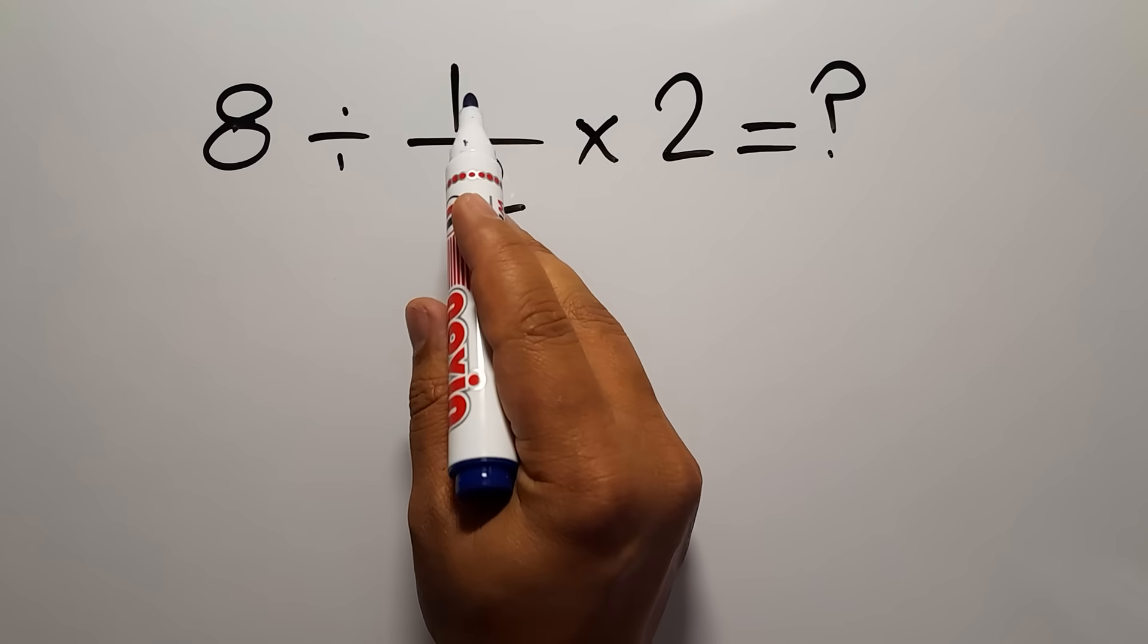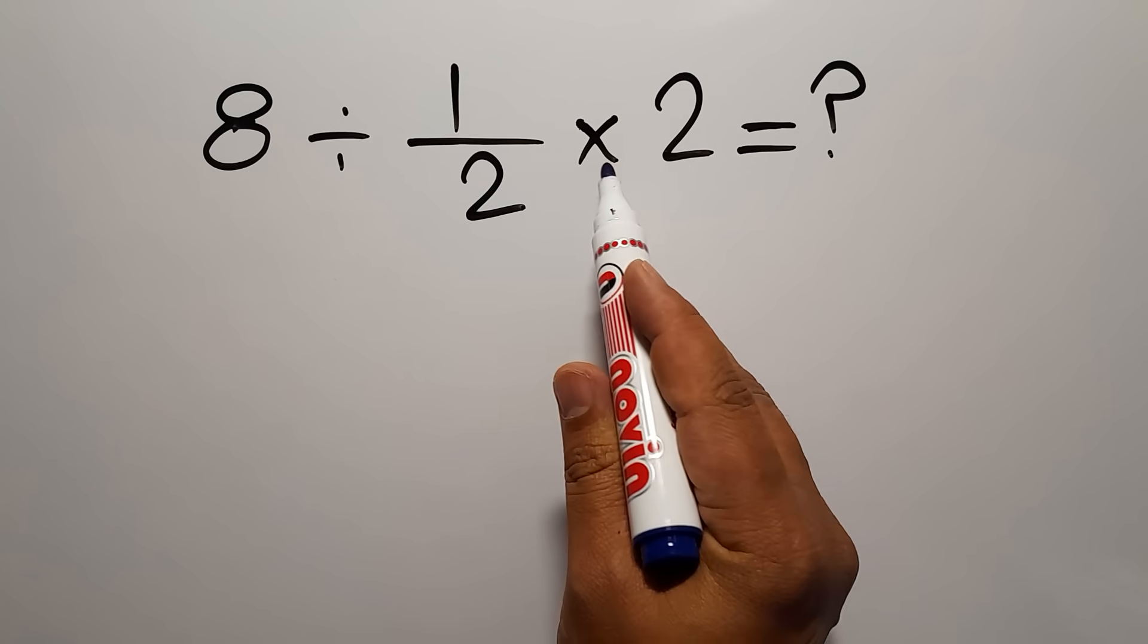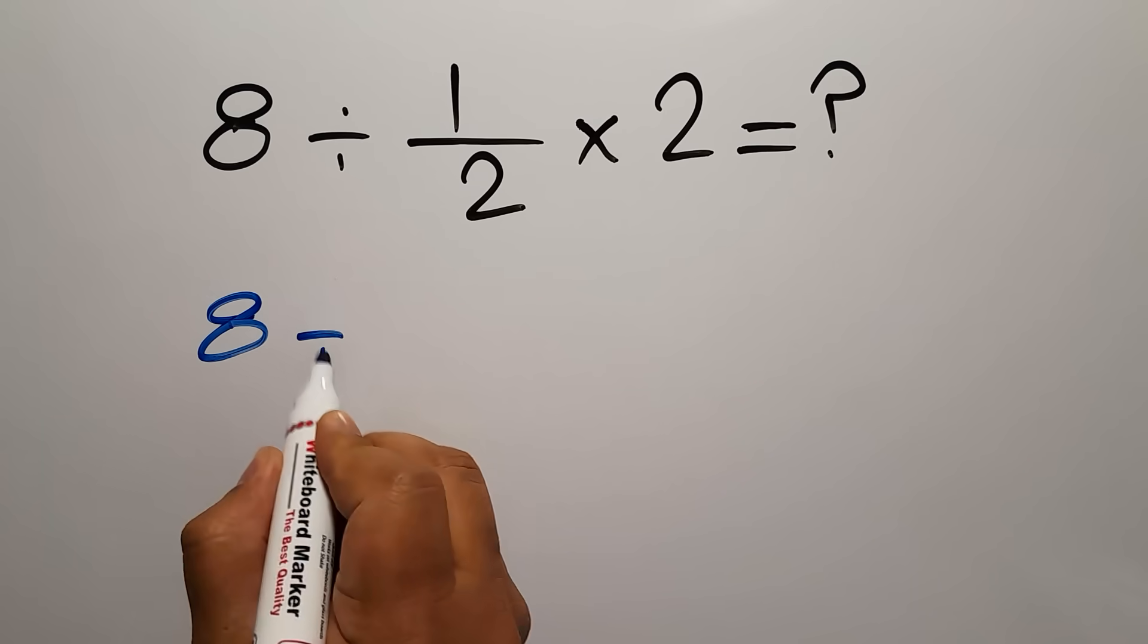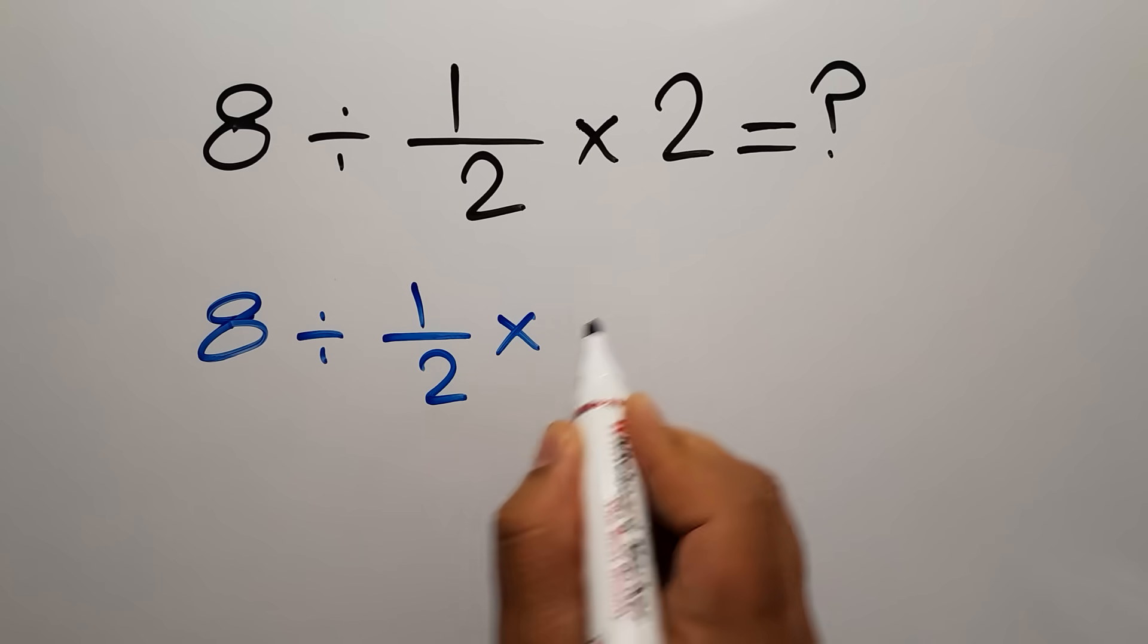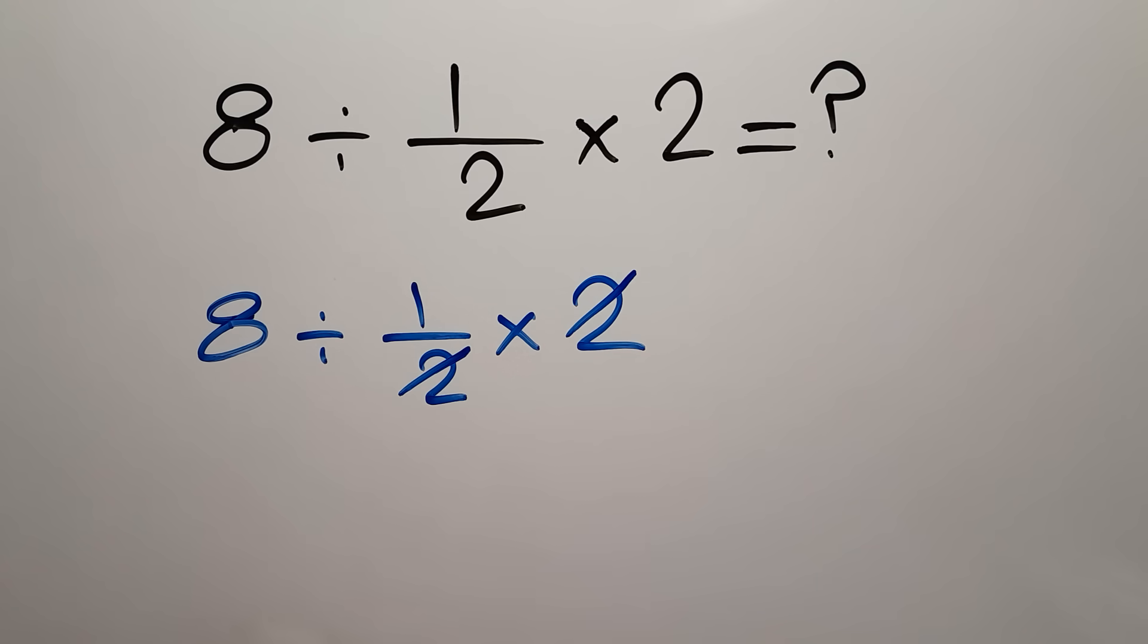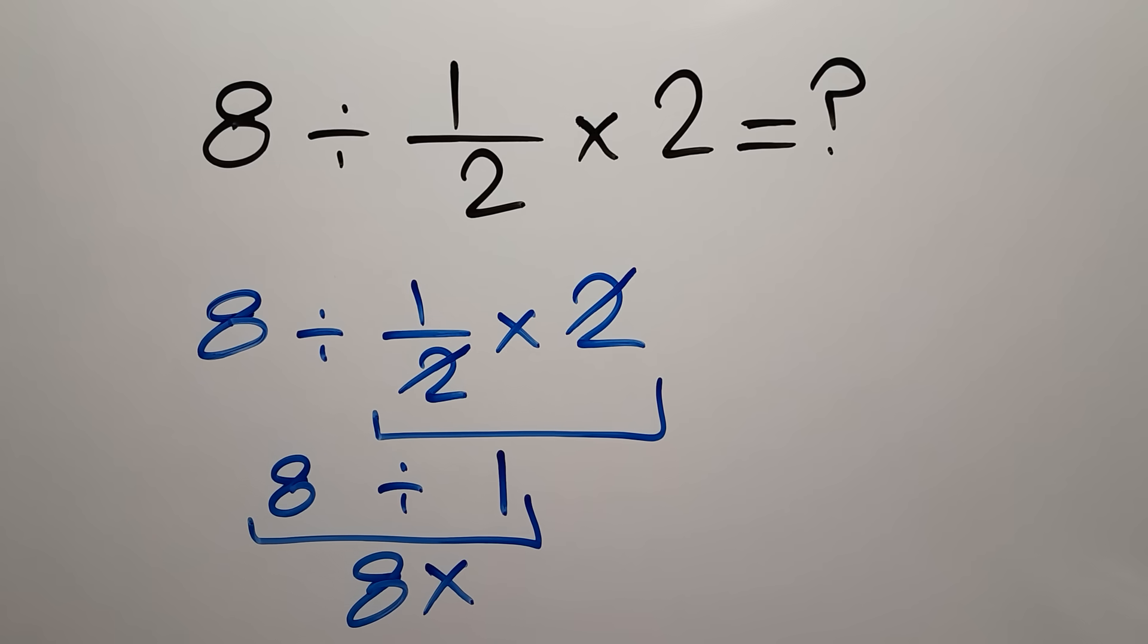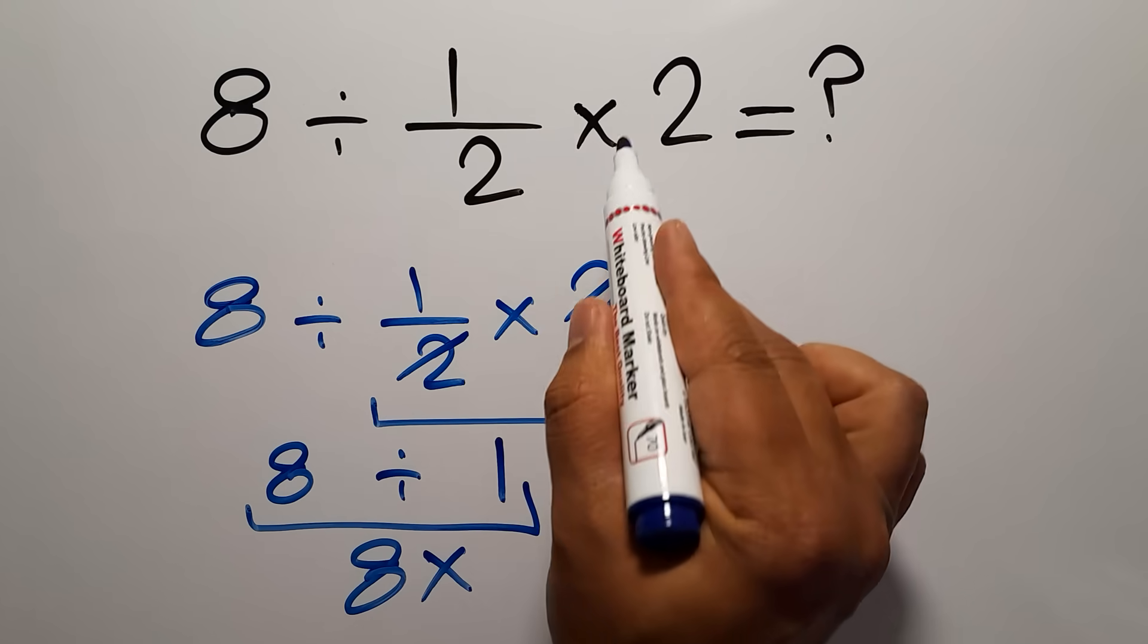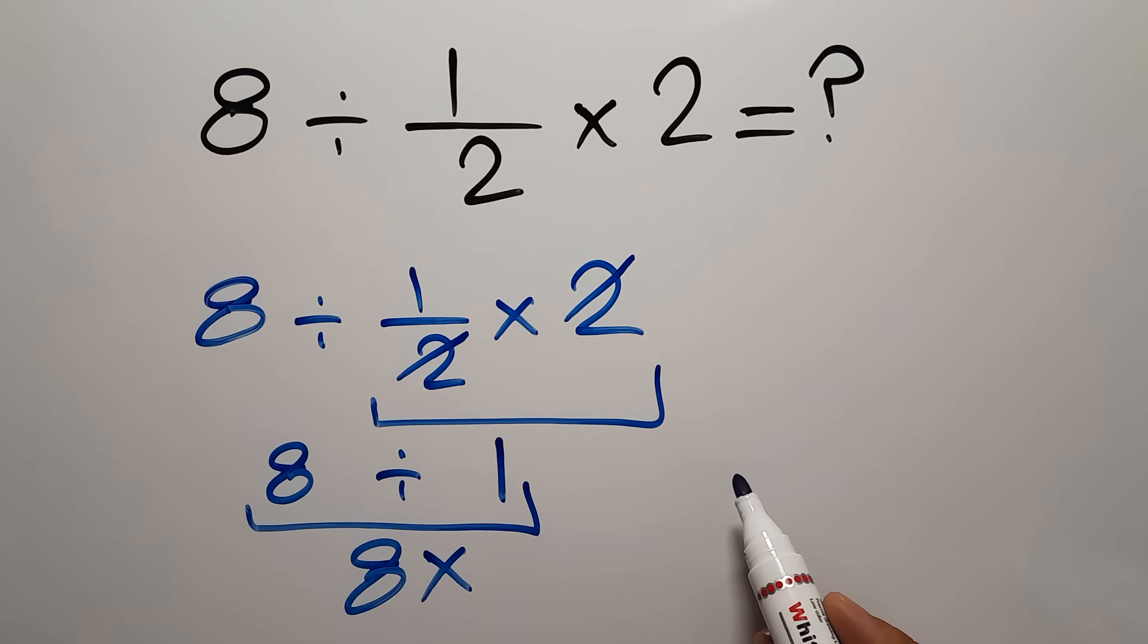8 divided by 1 over 2 then times 2. We can easily cancel these two and this two, so here we have just one. So 8 divided by 1 which equals 8. But this answer is not correct.